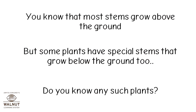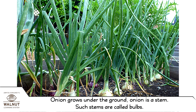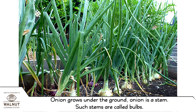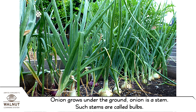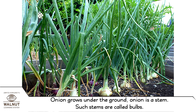You know that most stems grow above the ground. But some plants have special stems that grow below the ground too. Do you know any such plants? Onions grow under the ground — onion is a stem, and such stems are called bulbs.